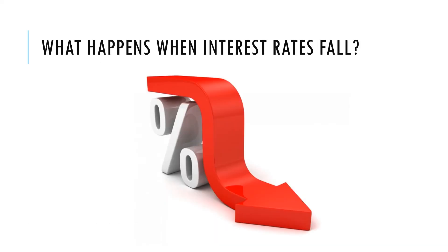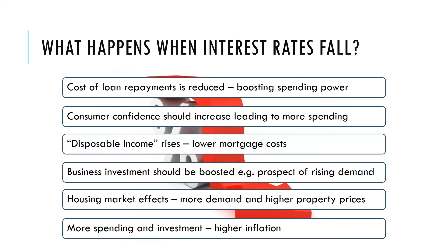The bank can control the economy by raising or lowering interest rates. Let's look at what might happen if interest rates were to fall. More money is borrowed in the economy than is saved, so let's consider the effect on borrowers. If interest rates fall, the cost of your mortgage or loan is reduced, meaning you can spend more money. You're more confident as a consumer, your disposable income rises, and businesses may also be more keen to borrow money and invest.